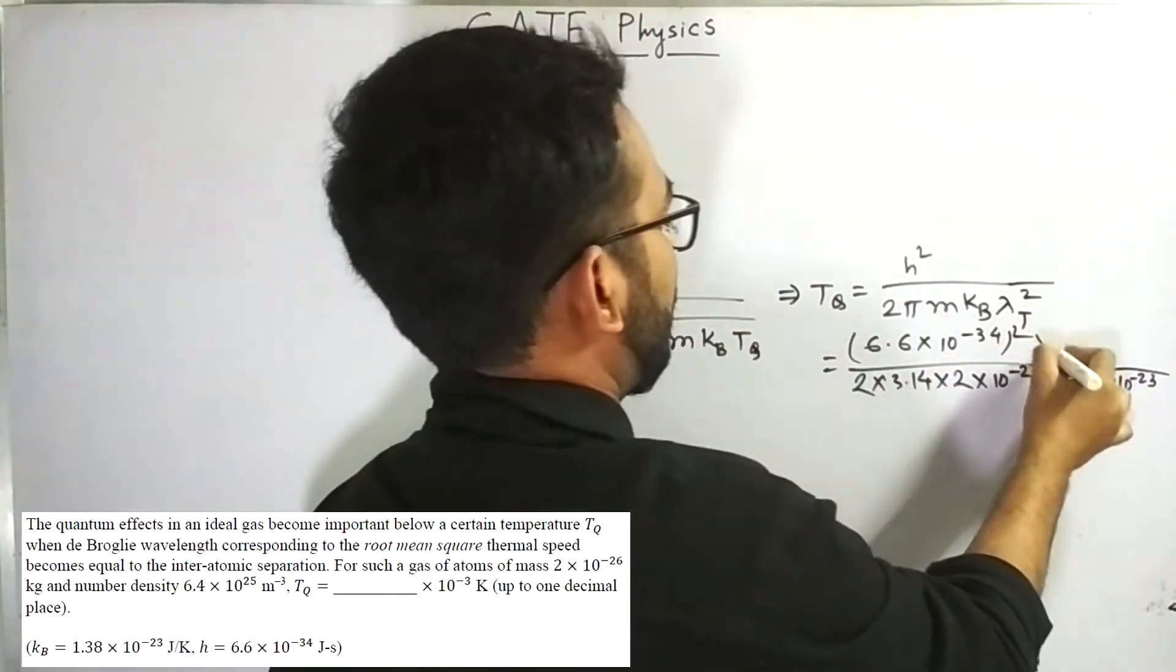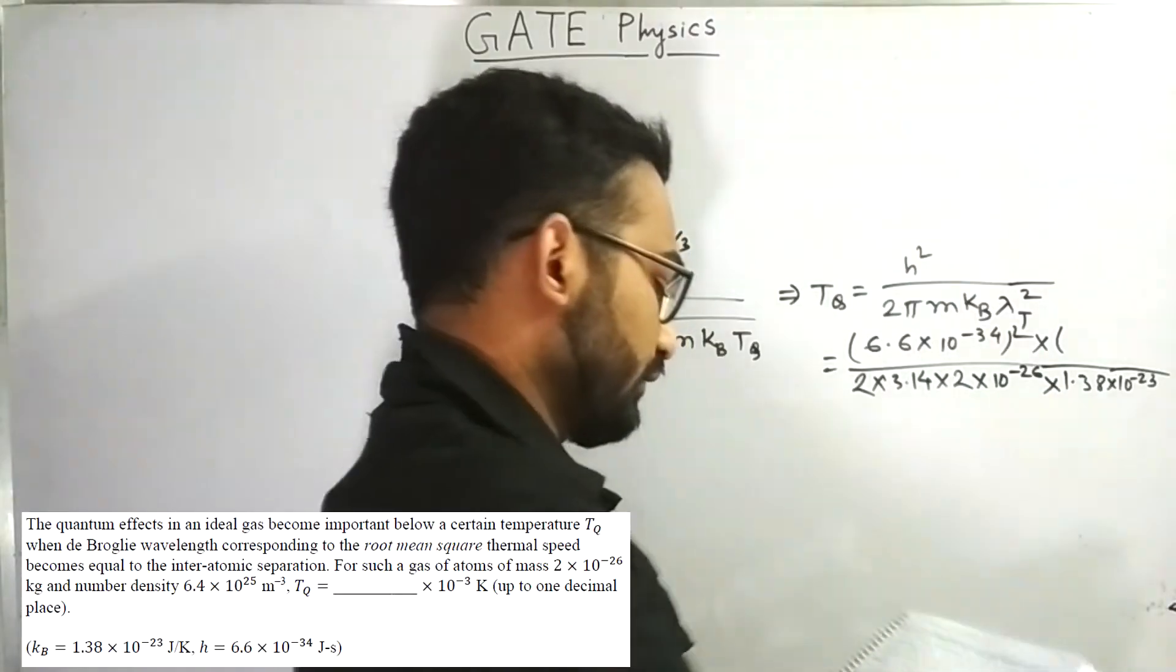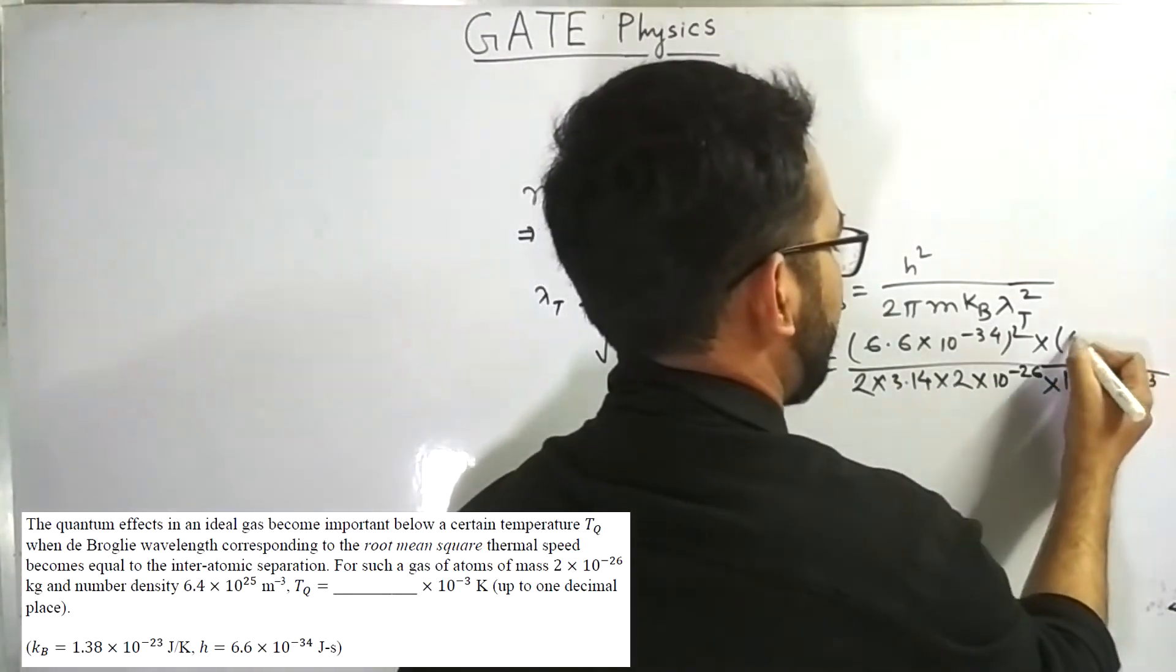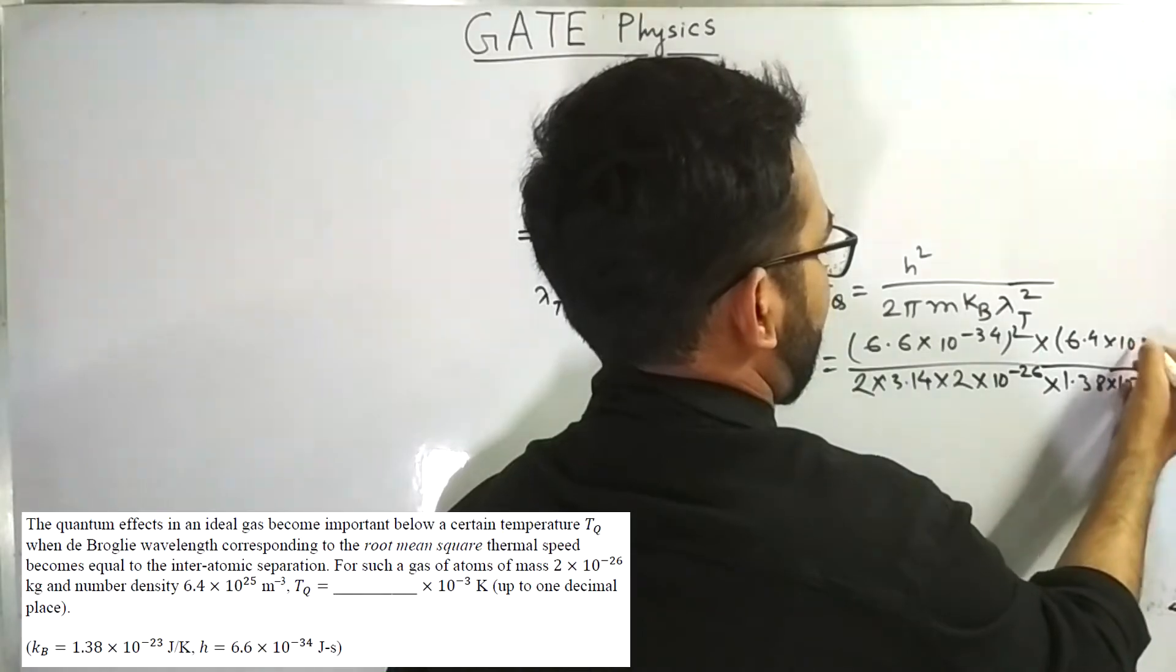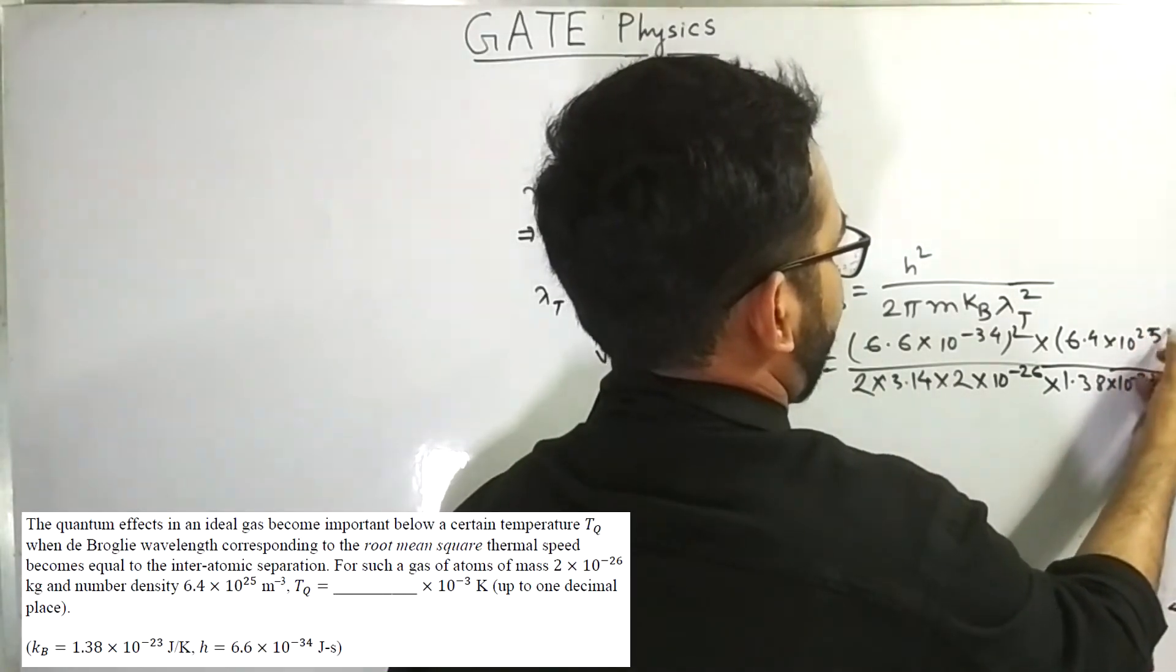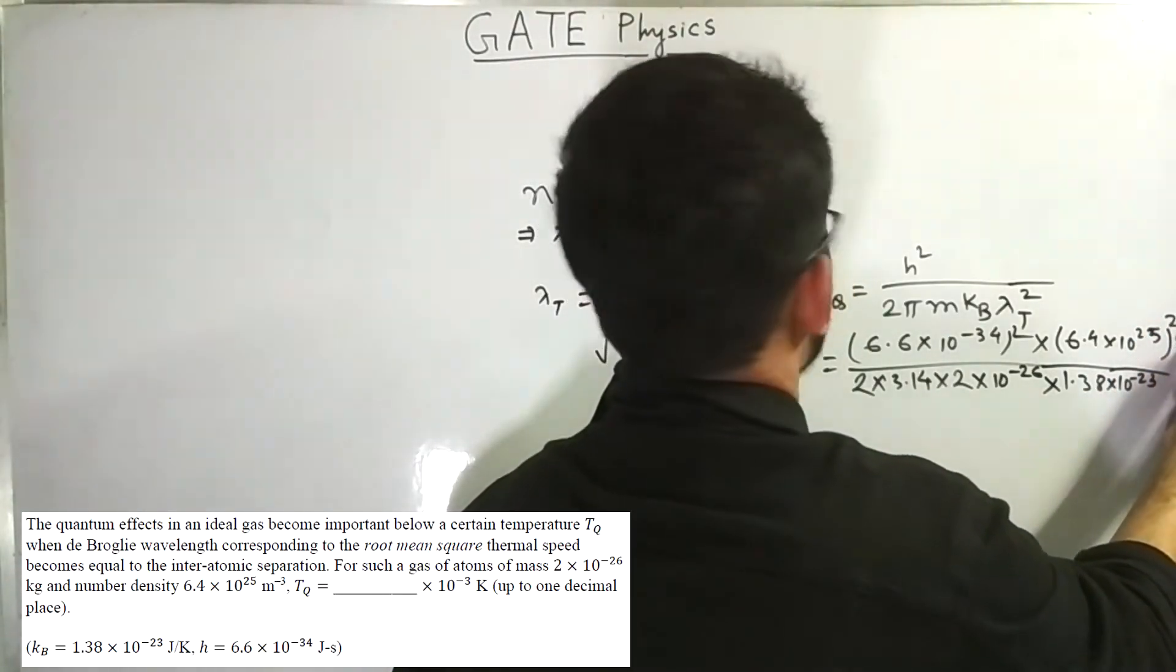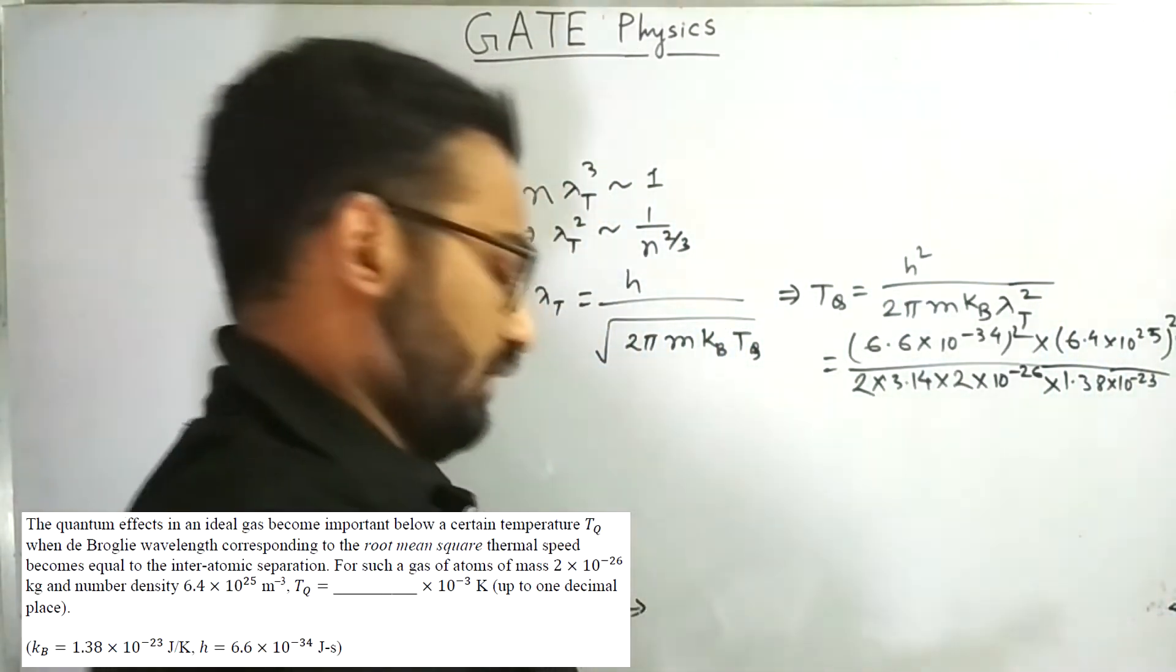So, it will come up. So, n value of n is also given 6.4 into 10 to the power 25 to the power 2 by 3.